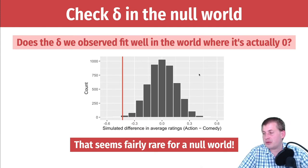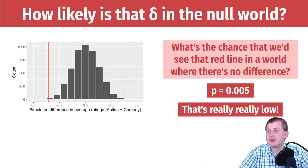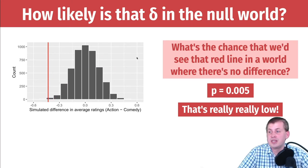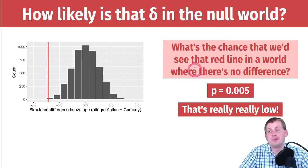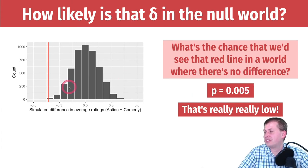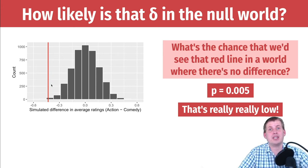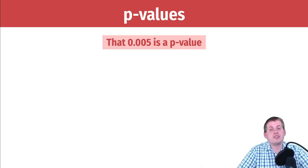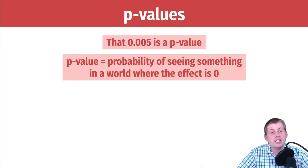It feels rare, which means it's probably not zero. We can actually quantify how rare it is: we calculate the probability of seeing that red line in a world where there's no difference. That is the p-value. The probability of seeing our result in a world where there's no difference between action and comedy movies is 0.005 — meaning if we ran this simulation 10,000 times, we'd see that result only about five times. That's pretty rare.